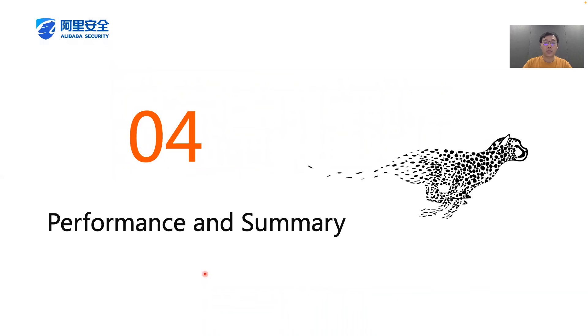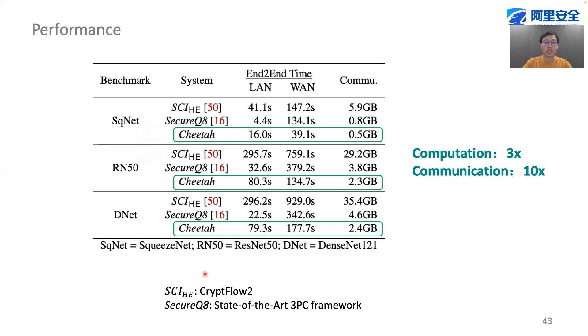In the end, let's briefly conclude with the performance of Chita. In general, the whole system computation performance is boosted by three times, with only one-tenth of communication overhead compared to previous work.